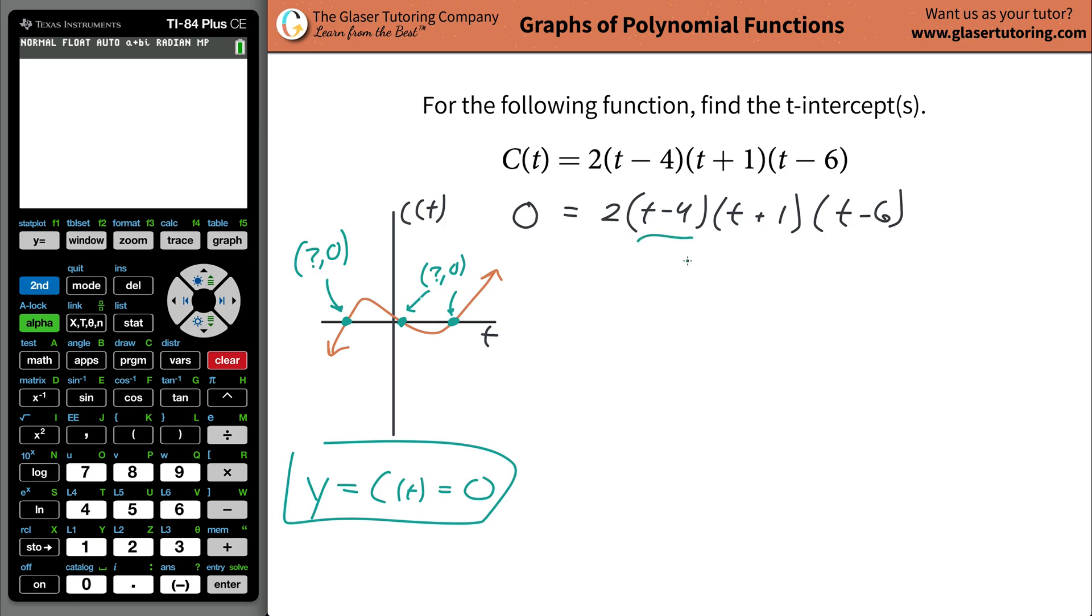If this term is equal to zero, then what does this whole side become? It has to become zero. Because this would be two times zero times who cares what that is times who cares what that is. But no matter what, as long as you have a zero in there, zero times anything is always going to be zero.